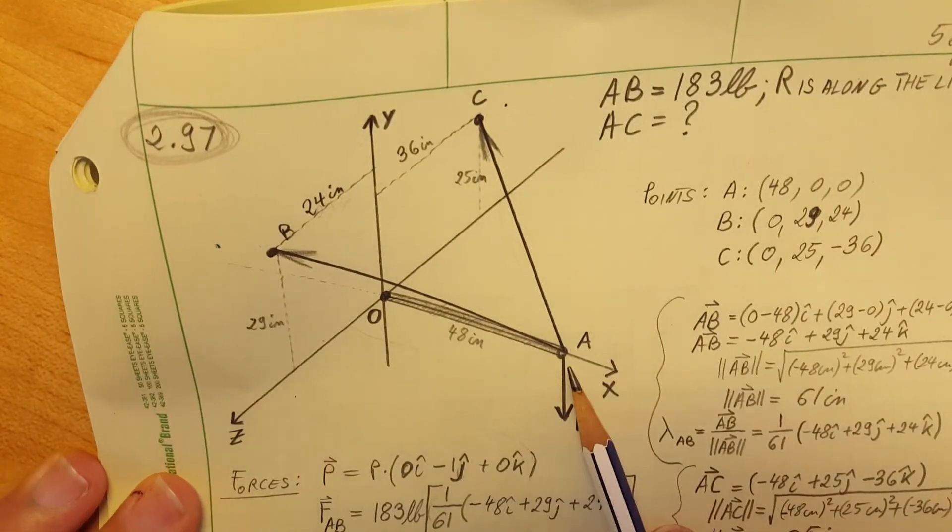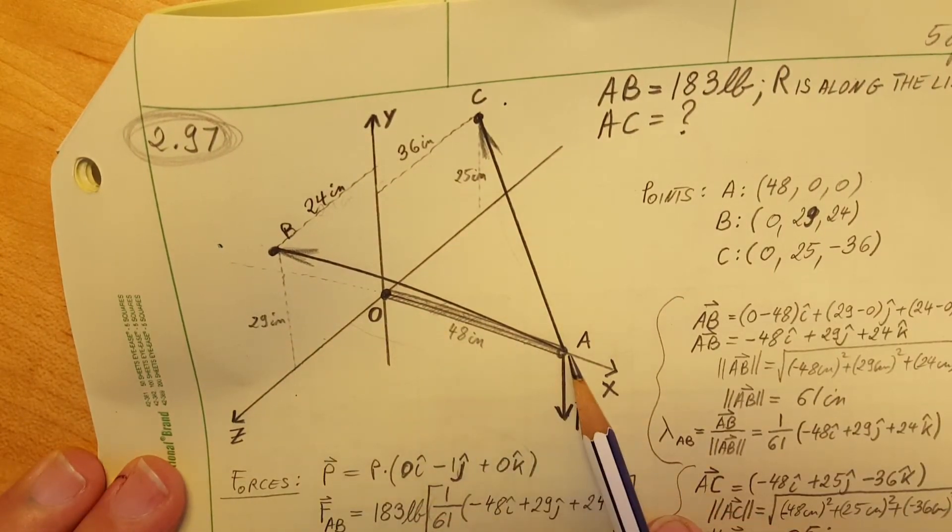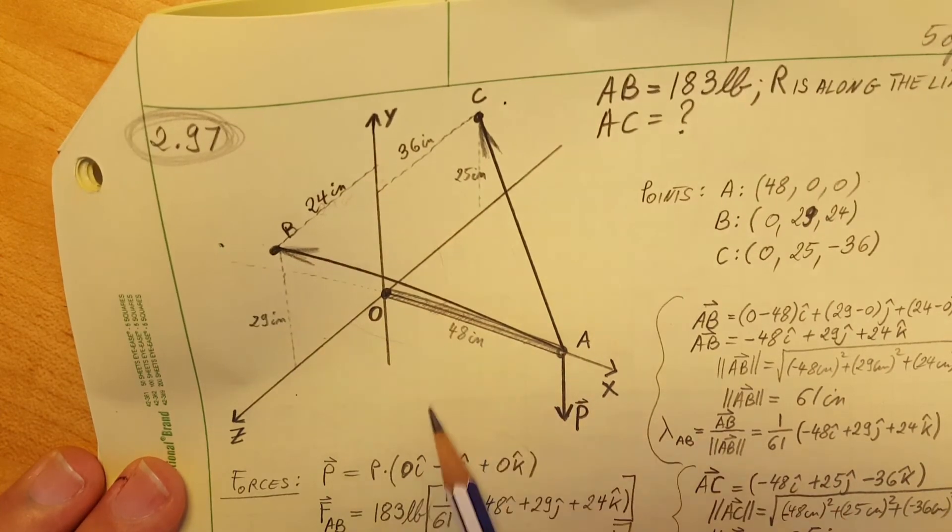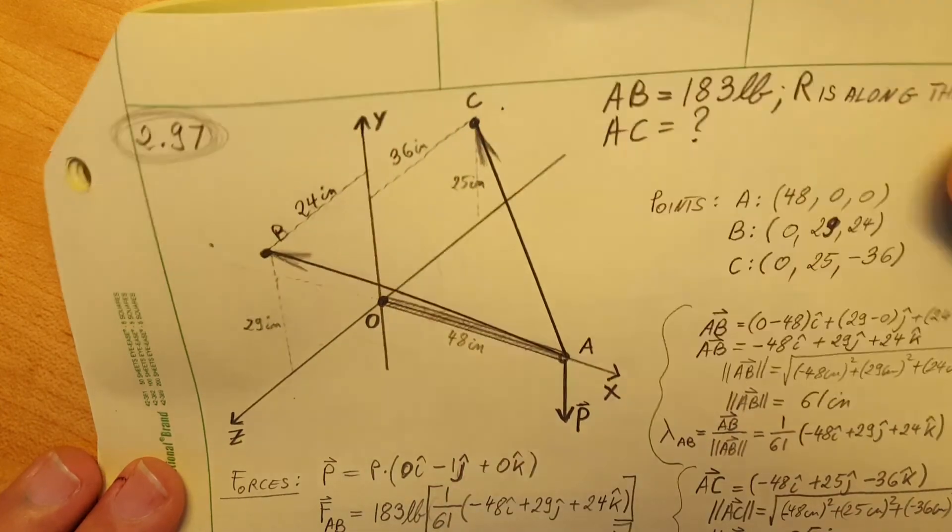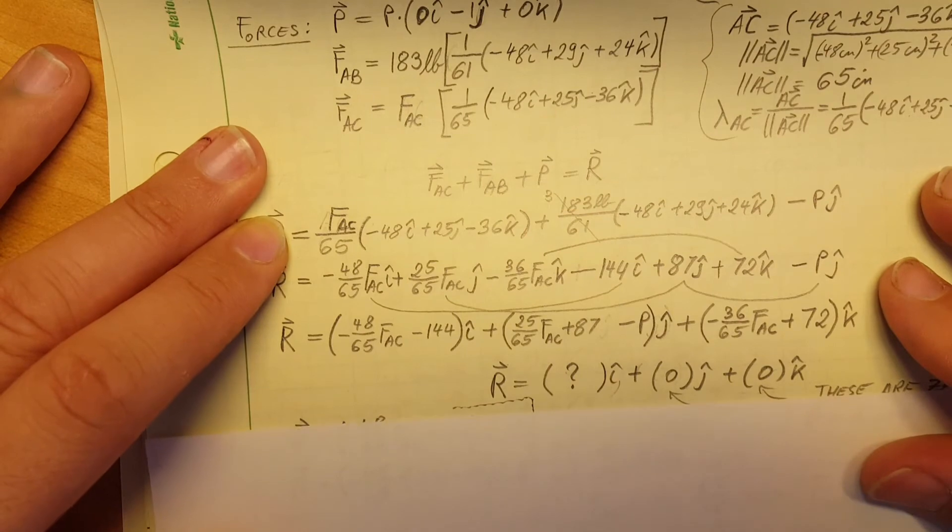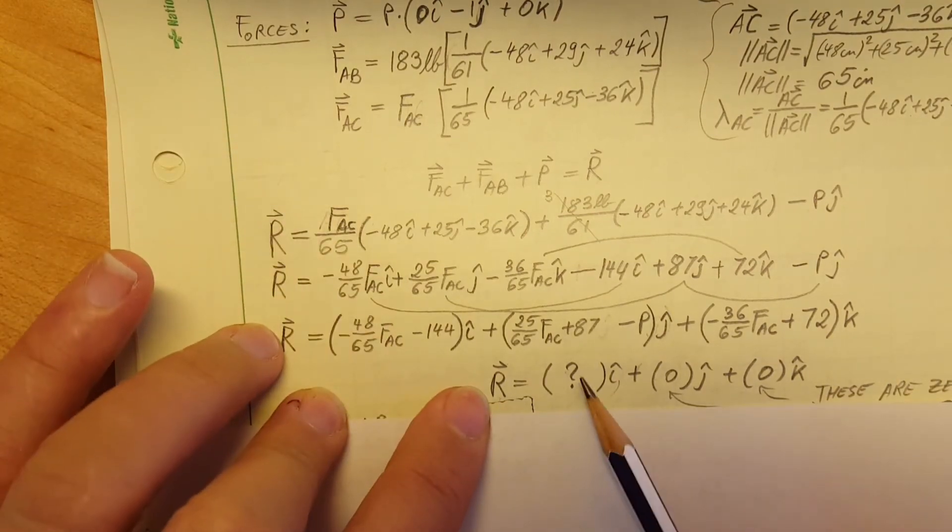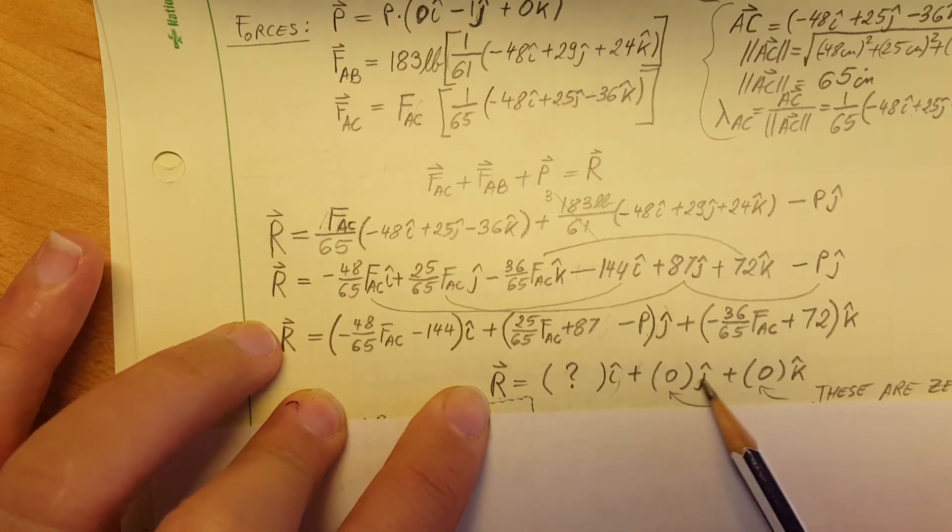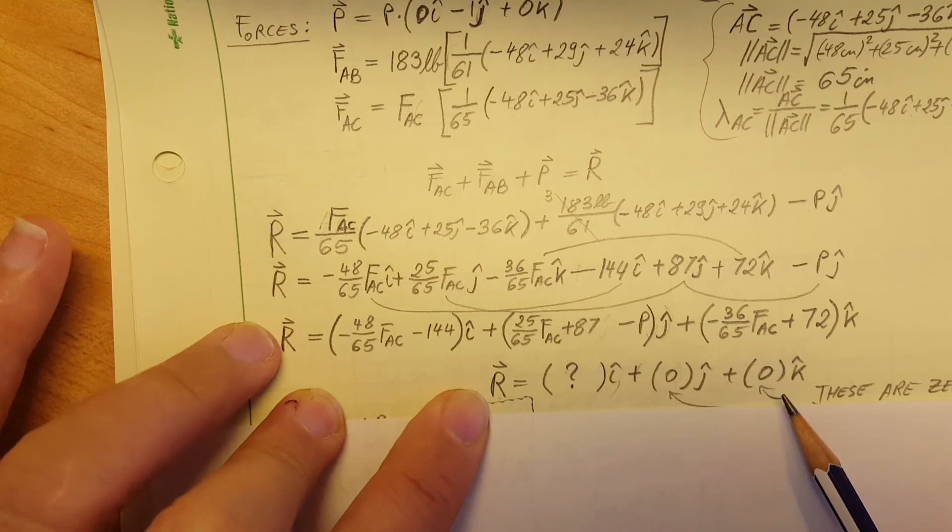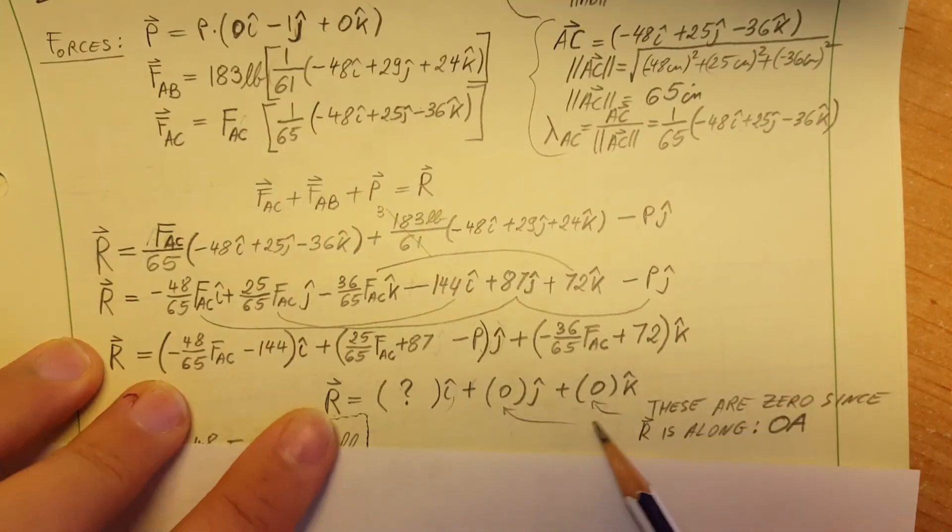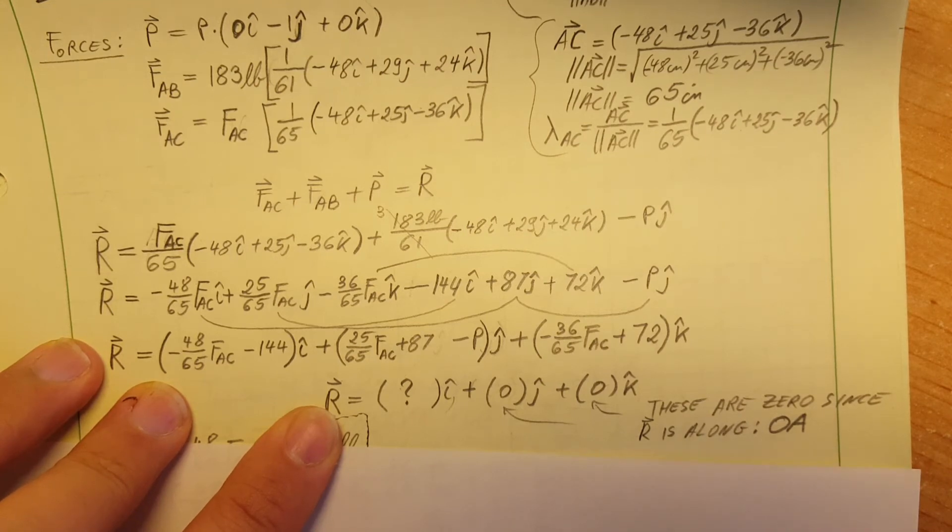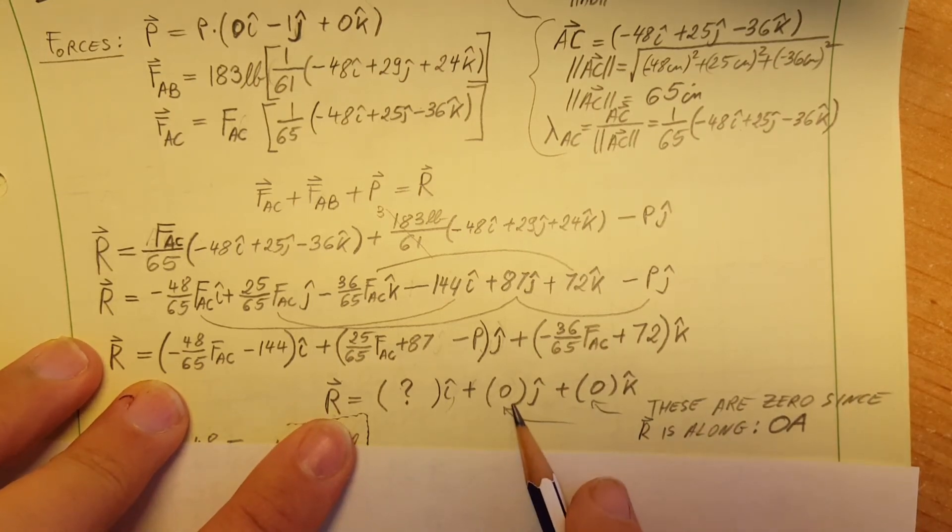Now what do we know about our R vector? We know that it is going along this line, so we can tell that it's along the x axis. There's nothing happening in the z or in the y axis. Therefore, when we look at our R vector, we know that something is going to happen in the i direction, plus nothing is happening in the j so 0 j, and nothing's happening in the k direction. So therefore we can be certain that it's going to be 0 j and 0 k, and these are 0 because R is along OA.